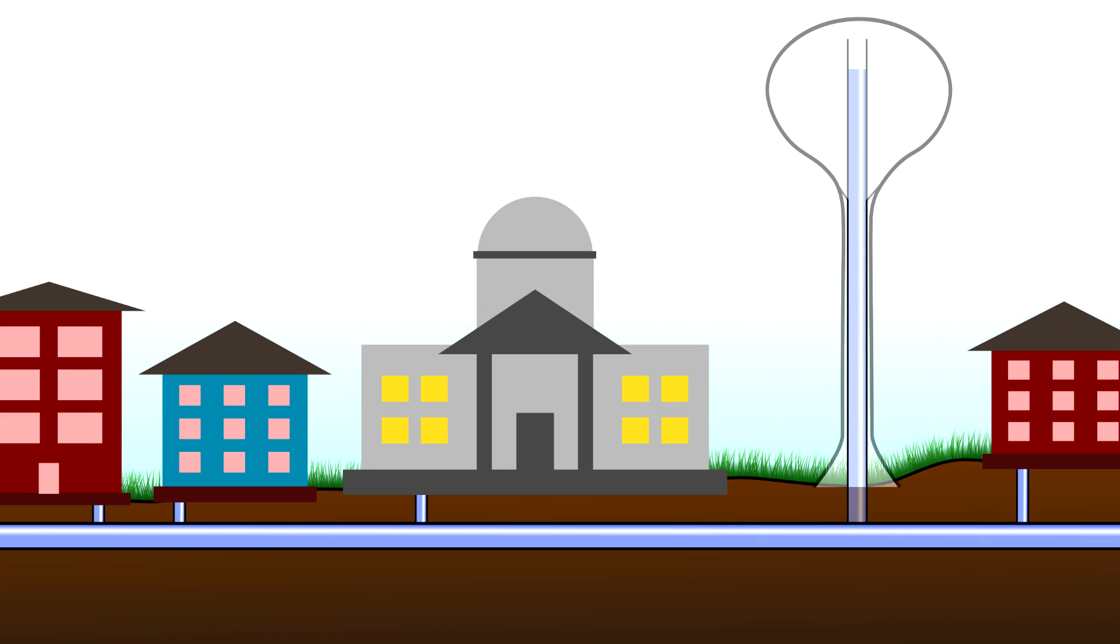Actually, we do have pipes exactly like this in almost every city. I'm talking about water towers. The height of the water surface in a water tower corresponds exactly to the pressure in the water mains.